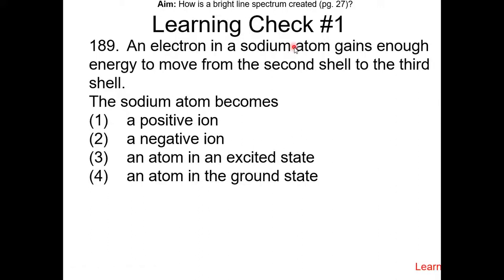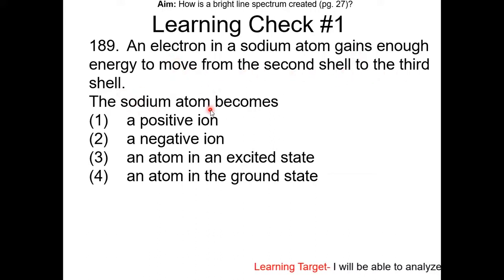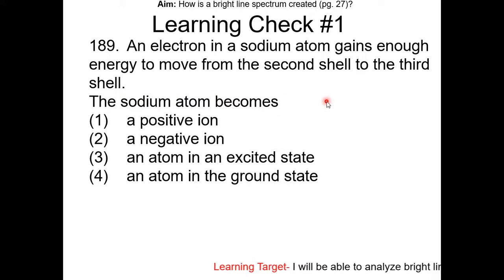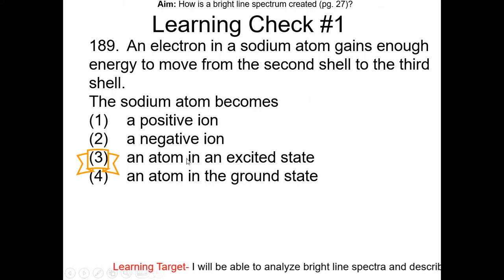Learning check number one: an electron in the sodium atom gains enough energy to move from the second shell to the third shell. The sodium atom becomes what? Pause the video and resume once you have the answer. The answer is: the atom is in the excited state.